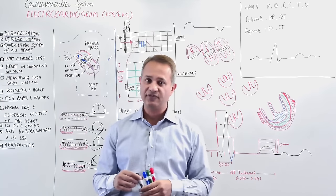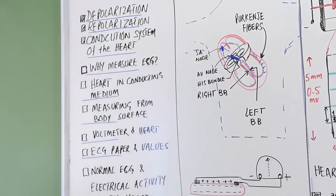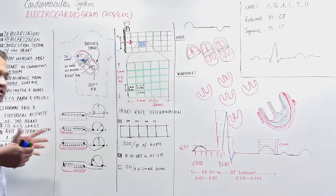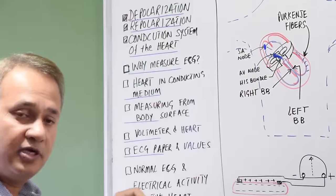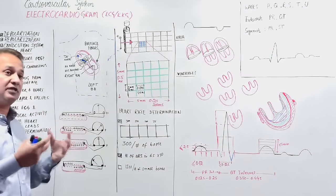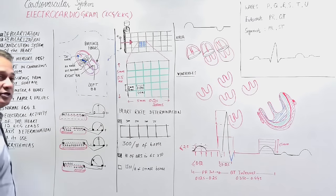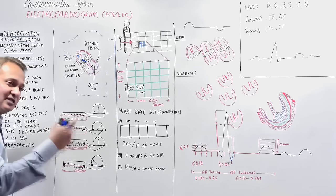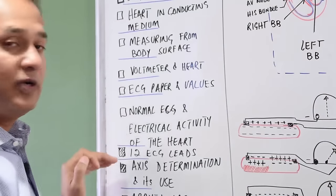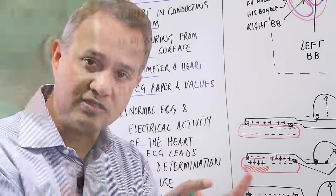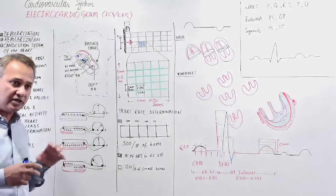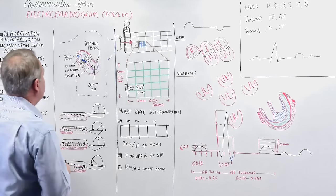This is a cardiovascular system physiology lecture about the ECG or EKG. Today we'll cover why we measure the ECG, what the heart's conduction medium is, how we can measure electrical activity from the body surface, the voltmeter, ECG paper, normal ECG electrical activity, 12-lead ECGs, axis determination, and arrhythmias or pathologies visible through the ECG.